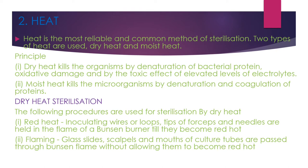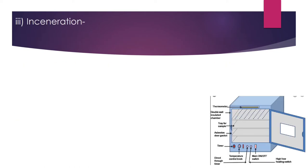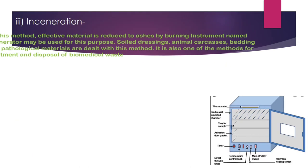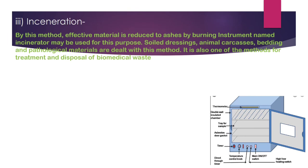The first dry heat method is incineration. In this method, infectious material is reduced to ashes by burning in an instrument called an incinerator. It is used for soiled dressings, animal carcasses, and pathological materials. It is also used for treatment and disposal of biomedical waste.